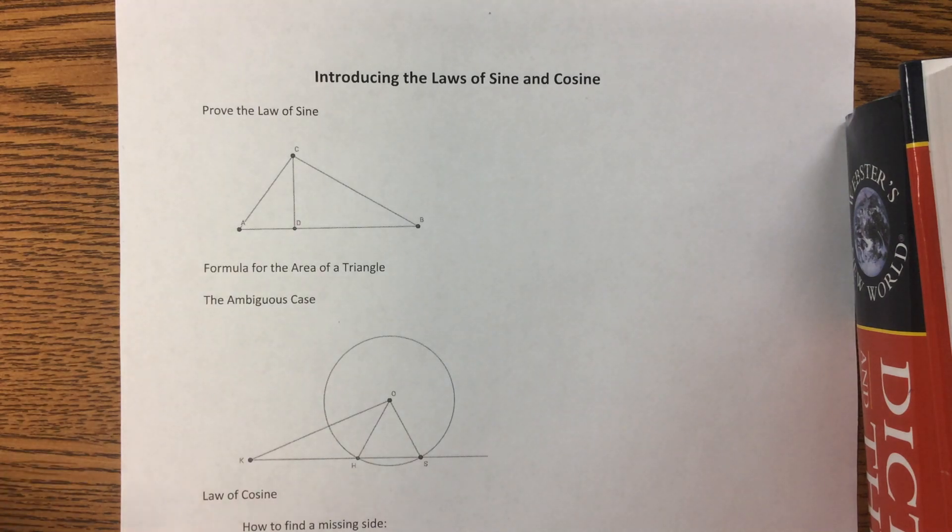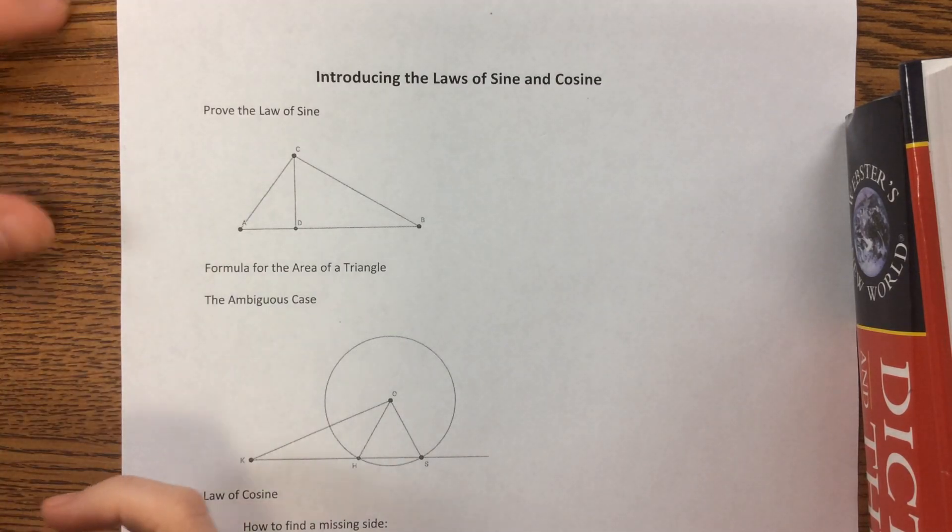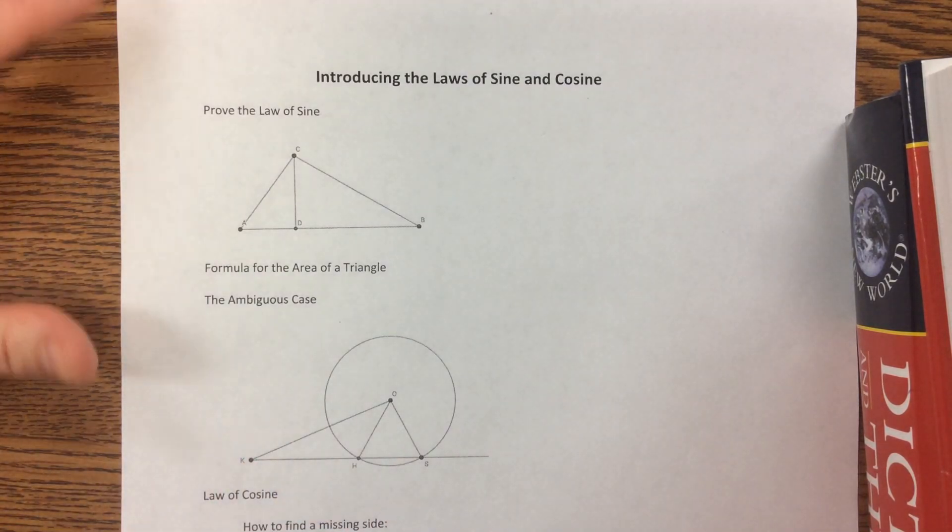Today we're beginning the law of sine and the law of cosine, and we will use this when we deal with non-right triangles. You can use it with a right triangle, it's just the hard way. So with right triangles, SOHCAHTOA is a lot easier.